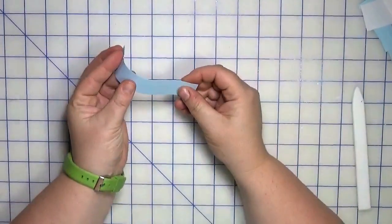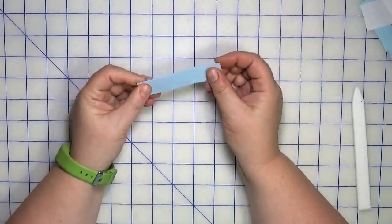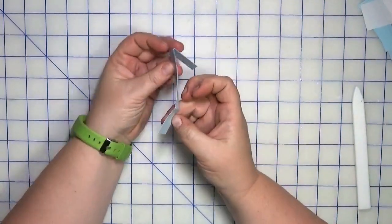Okay, so now you're going to take this piece and you're going to fold along the score line one way and fold the other way so you have a zigzag.